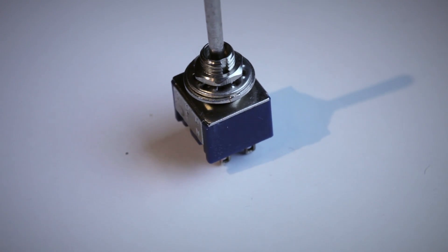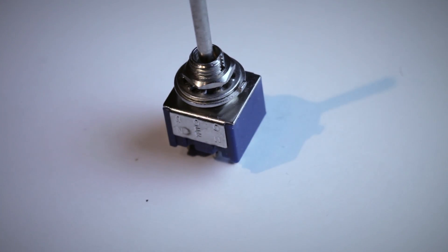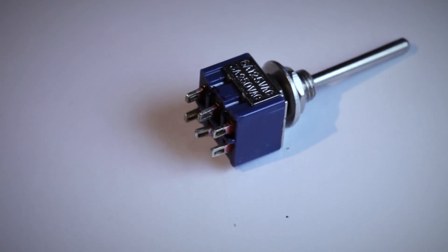In this tutorial, we're going to use a toggle switch that has three positions in it in order to make a DC motor run forwards and backwards.